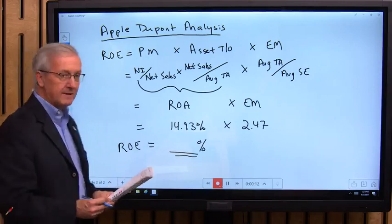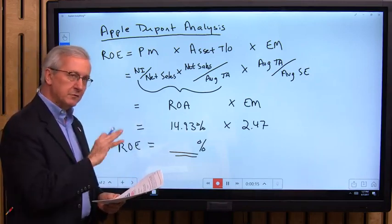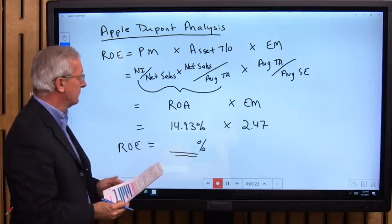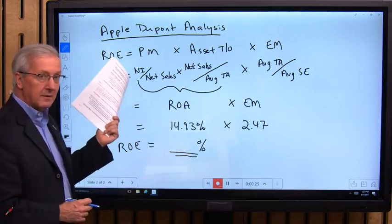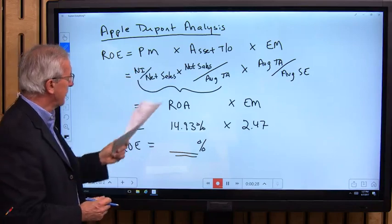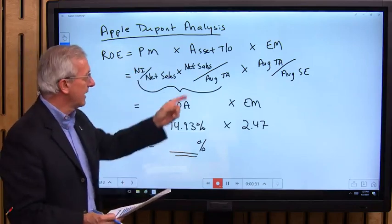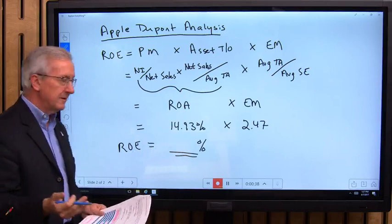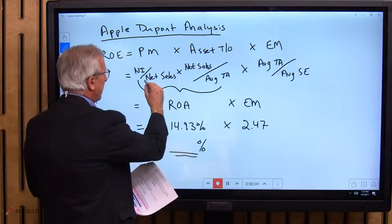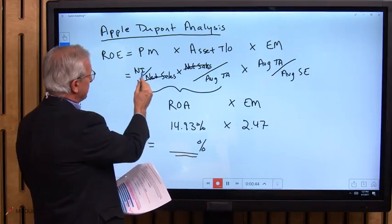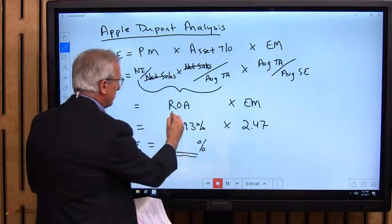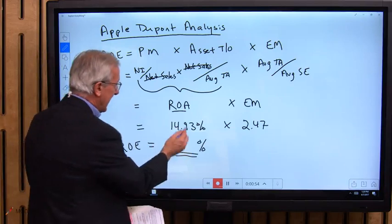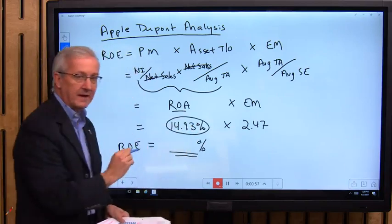Today we want to talk about the Apple DuPont analysis. As you remember from our lecture, I wanted you to do the calculations for the DuPont analysis using the 2016 Apple financial statements. Let's walk through that together. The return on equity is the profit margin times the asset turnover times the equity multiplier. Those break down into three formulas — and by crossing through the like terms, the profit margin times asset turnover gives us return on assets, which is net income divided by average total assets. For 2016, Apple's ROA is 14.93 percent — a very healthy return.